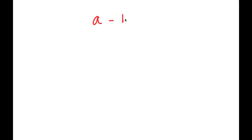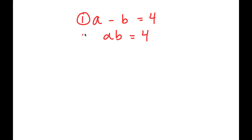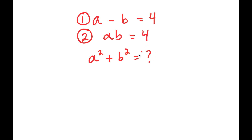In this video, I'm going to solve this system of equations: a minus b is equal to 4, and a times b is equal to 4. I'll label a minus b equals 4 as equation 1, and a times b equals 4 as equation 2. I want to find the value of a squared plus b squared.